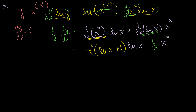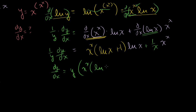The left-hand side was 1 over y times dy/dx. Multiplying both sides by y, we get dy/dx equals y times all of that: x^x times (ln x + 1) times ln x, plus (1 over x) times x^x. That last term can be rewritten as x to the (x minus 1), since (1/x) times x^x equals x^(x-1).